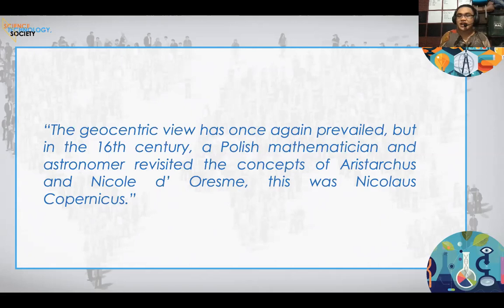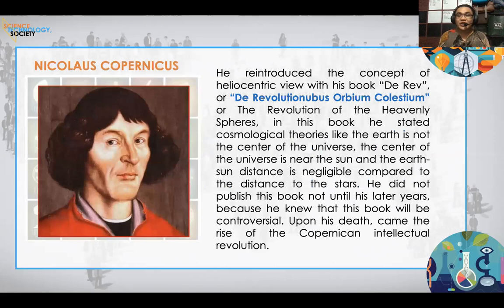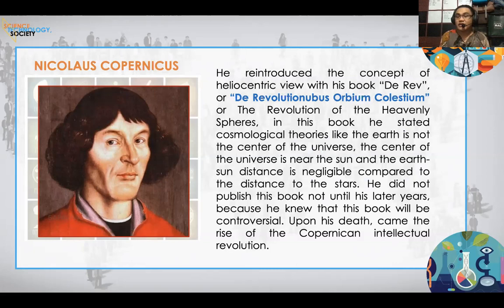But in the 16th century, a Polish mathematician reviewed the works of Aristarchus and Nicole de Orem, studied their contributions, refined the argumentation, and organized the concepts — and this was Nicholas Copernicus, which is why this is called the Copernican Intellectual Revolution. He reintroduced the heliocentric view through his book De Revolutionibus Orbium Coelestium — The Revolution of the Heavenly Spheres — the movement of the planets, the sun, and other spheres.